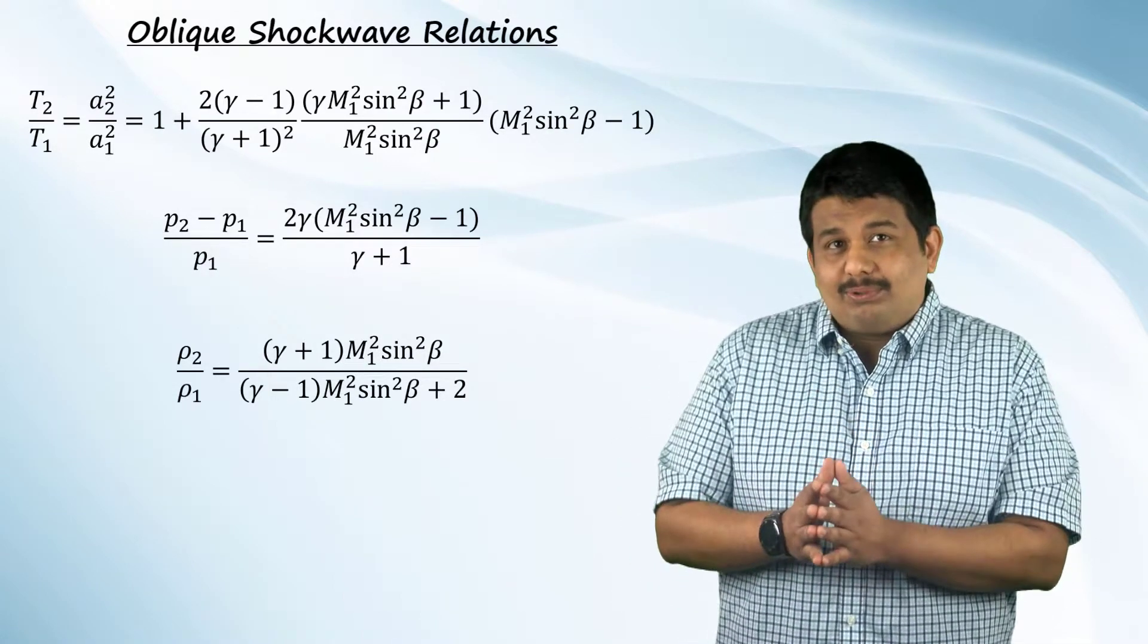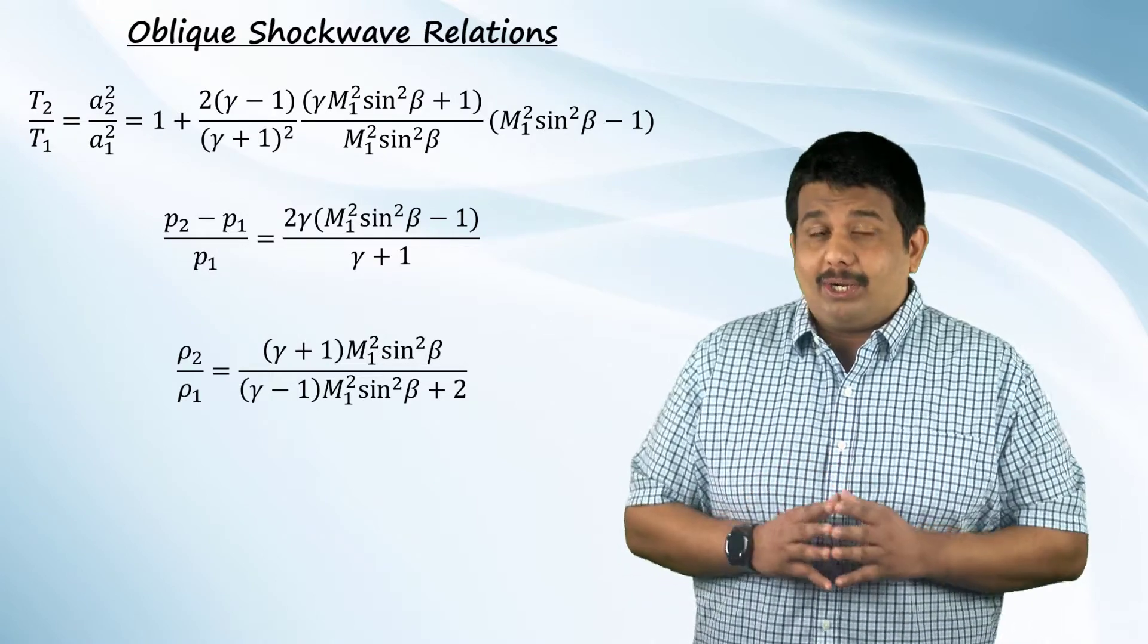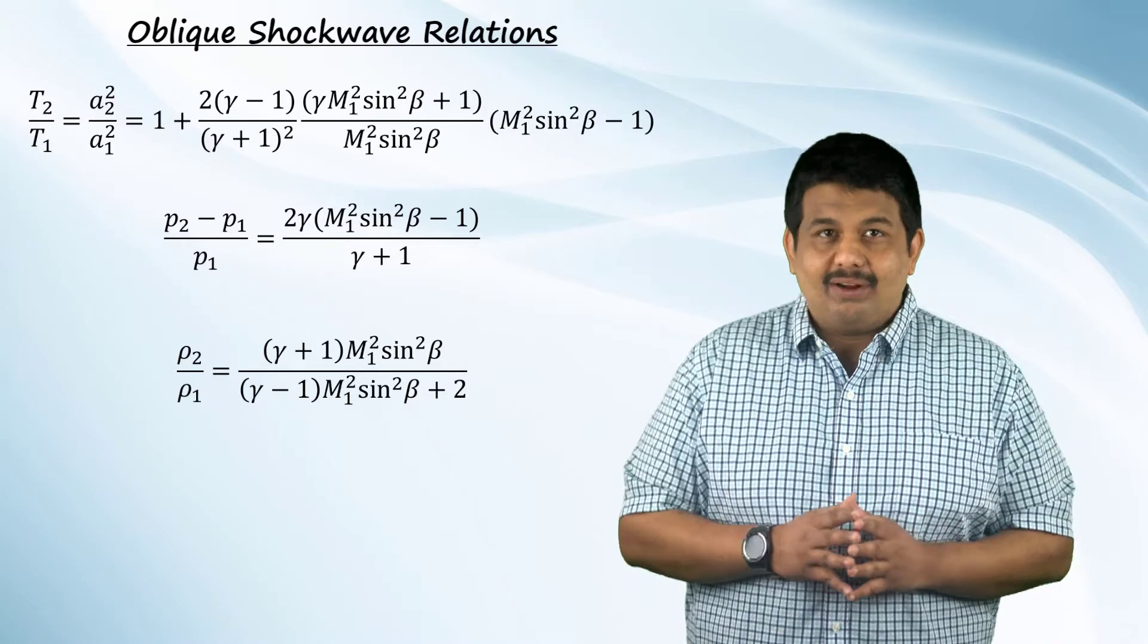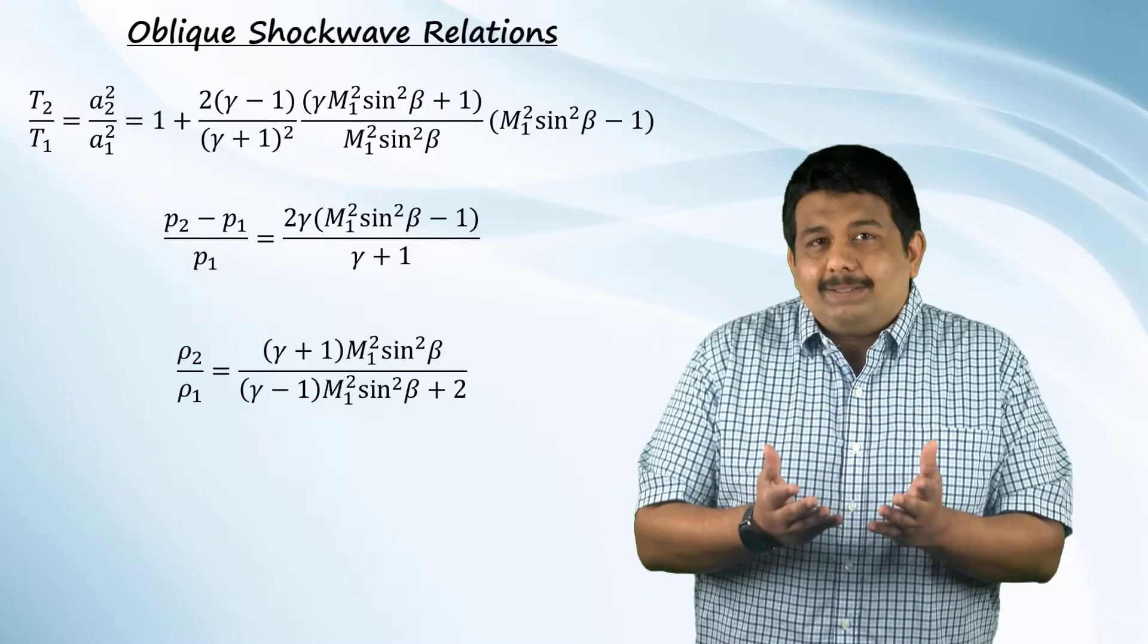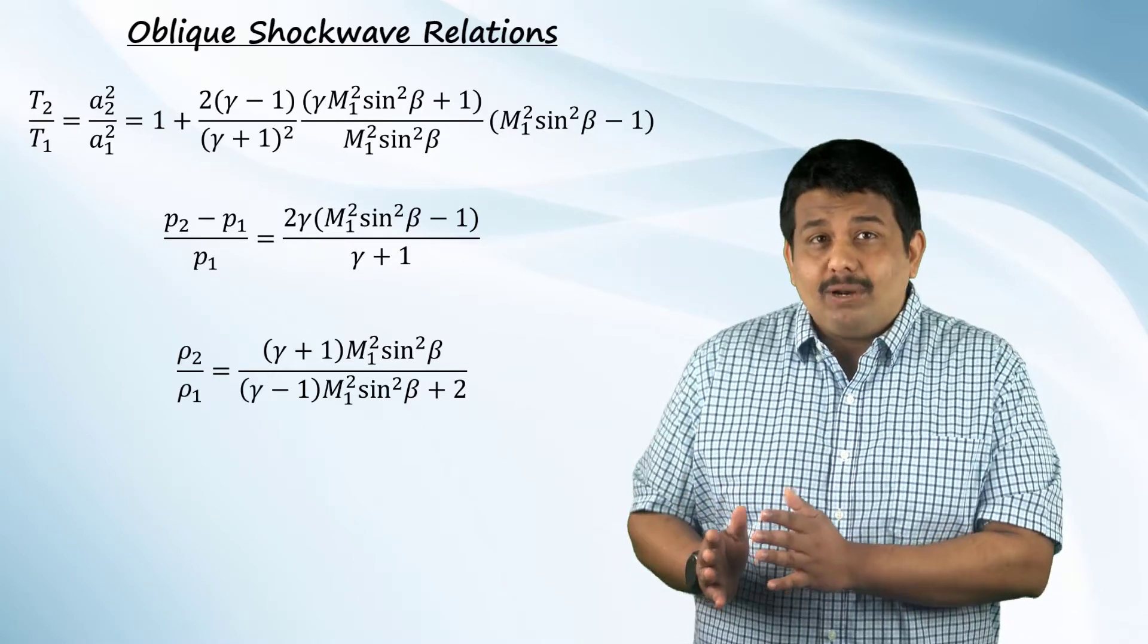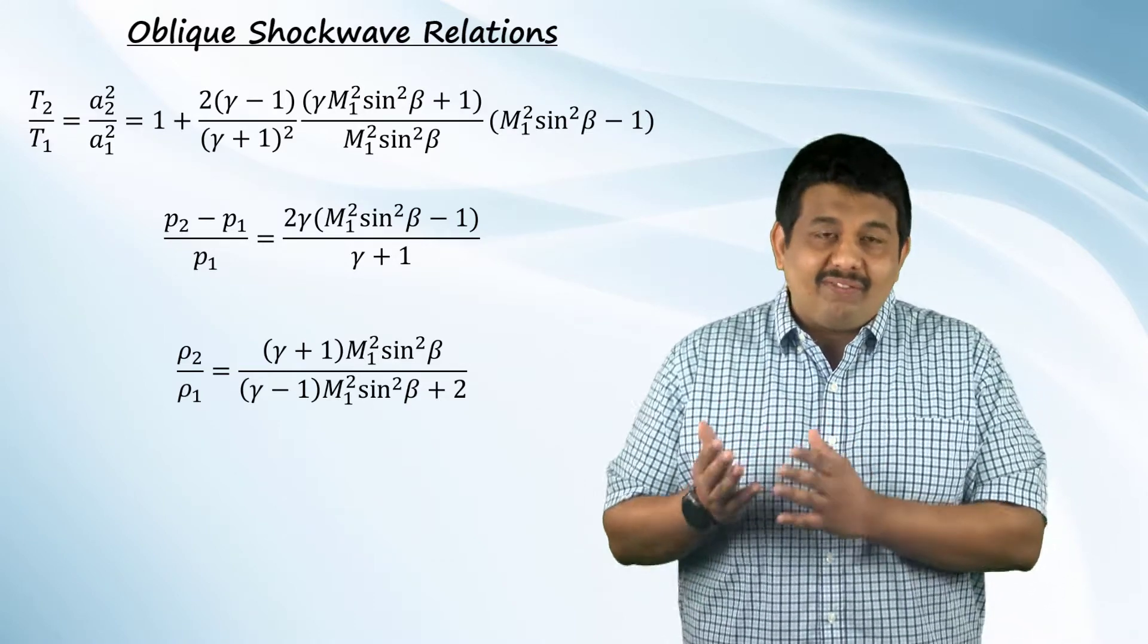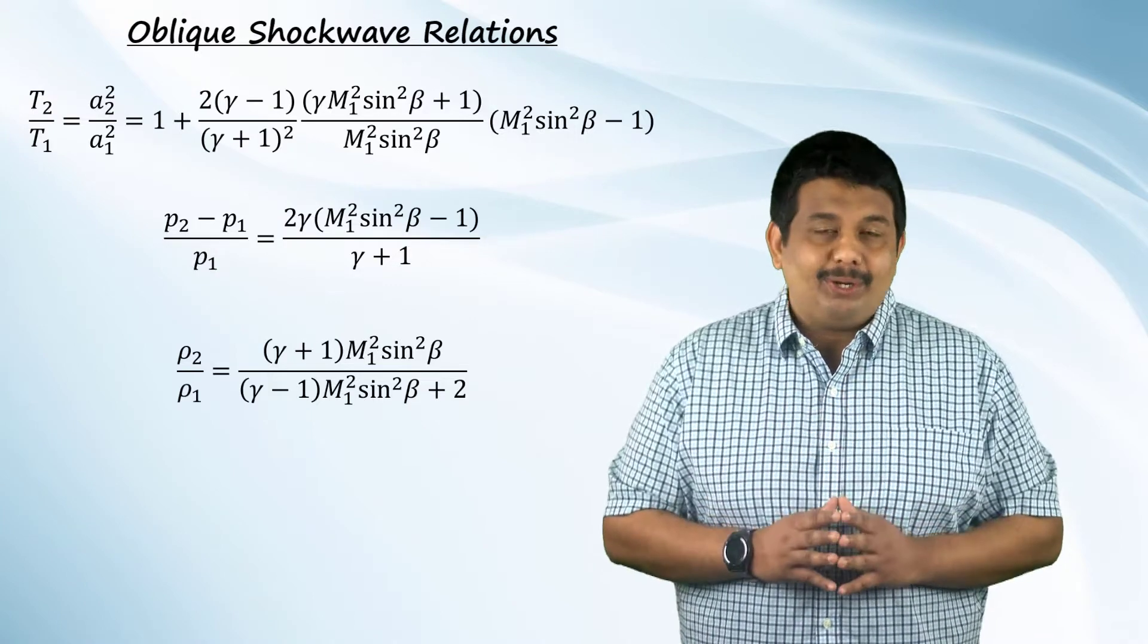In these relations, if you substitute for beta as pi by 2, the exact normal shock wave relations will be recovered. This basically indicates that the normal shock waves are just a unique case of oblique shocks when the shock wave angle is equal to pi by 2.